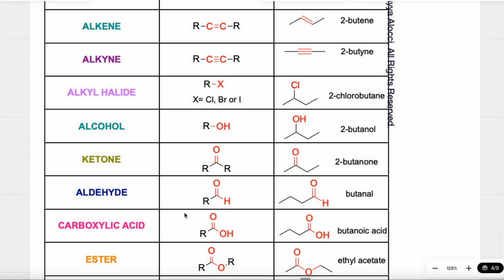We can have a C double bond O, called a carbonyl group. Specifically, if we have a C double bond O attached to a carbon that is attached to two other carbons — so in between carbons — this is called a ketone, ending in '-one'. I see a C double bond O; looking to the left and right, it's attached to carbon on the left and carbon on the right. That's a ketone. This example is called 2-butanone.